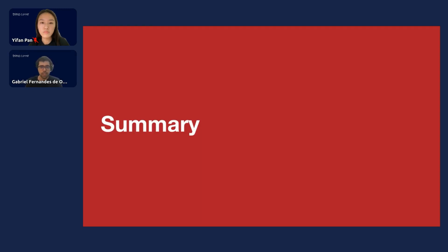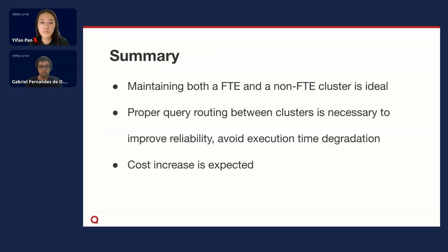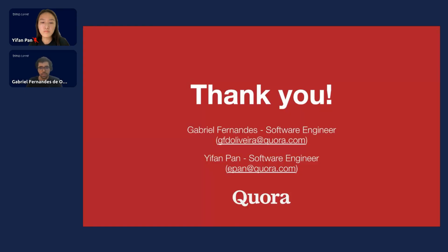To summarize our learnings: maintaining both a Trino cluster running fault tolerance mode and another cluster without fault tolerance was the best scenario for us. We were able to route queries based on their resource usage or length to either cluster, getting the benefits of fault tolerance while still maintaining short execution times for light queries. If you're planning to start using fault tolerance mode, you can expect some cost increase, but in our experience this has been well worth it because of the improved reliability. Feel free to reach out to me or Yifan if you have any questions, and thanks for joining the session.